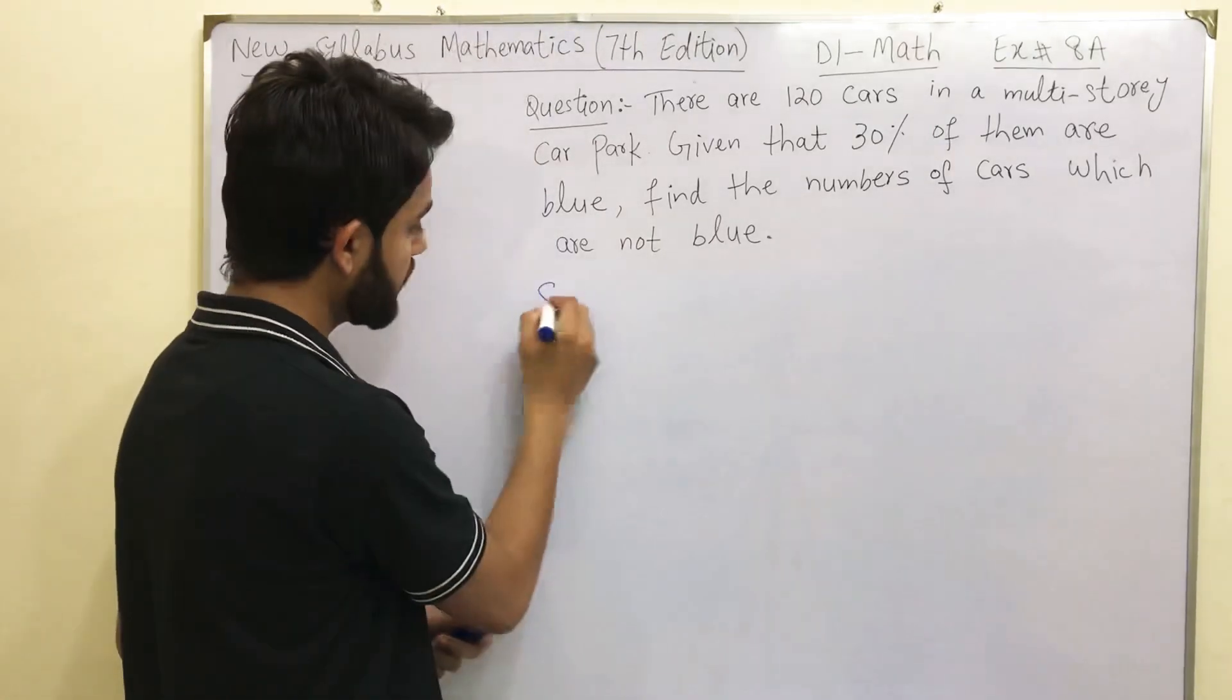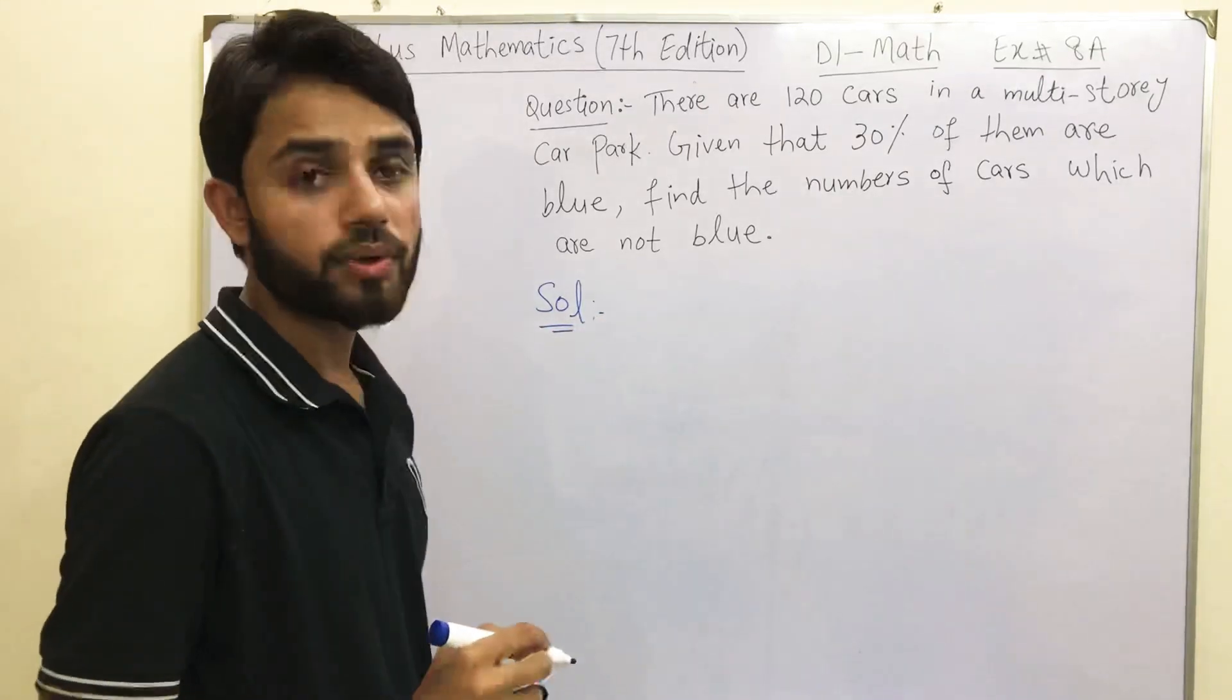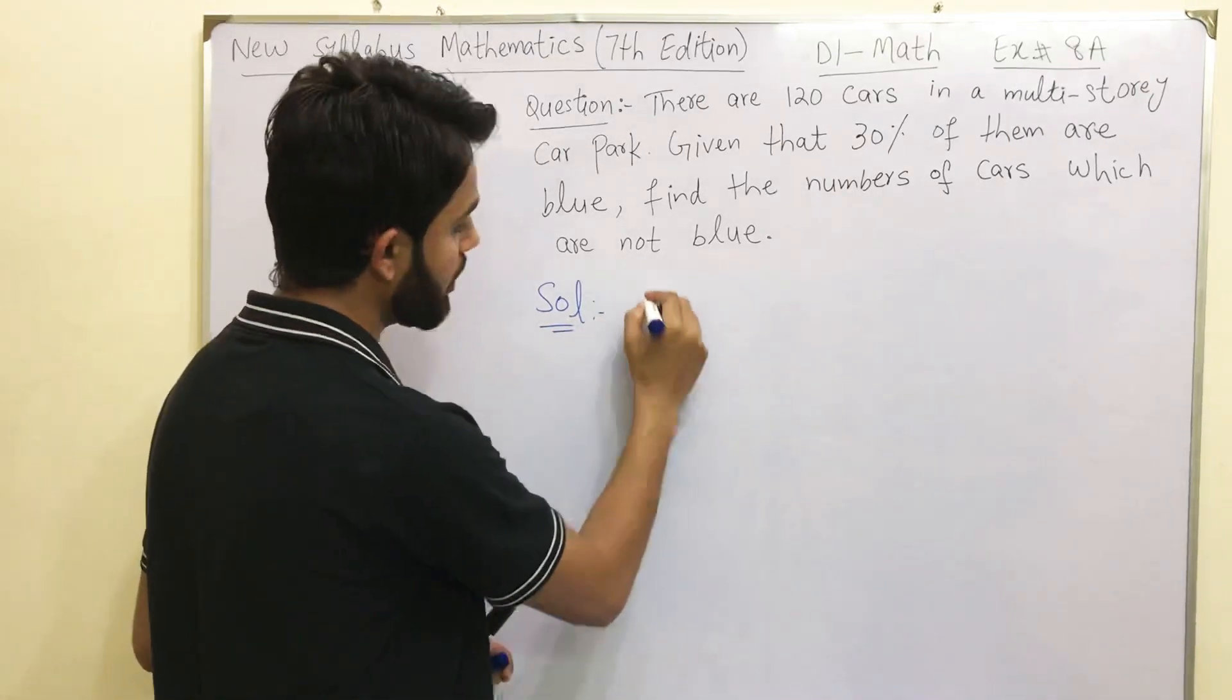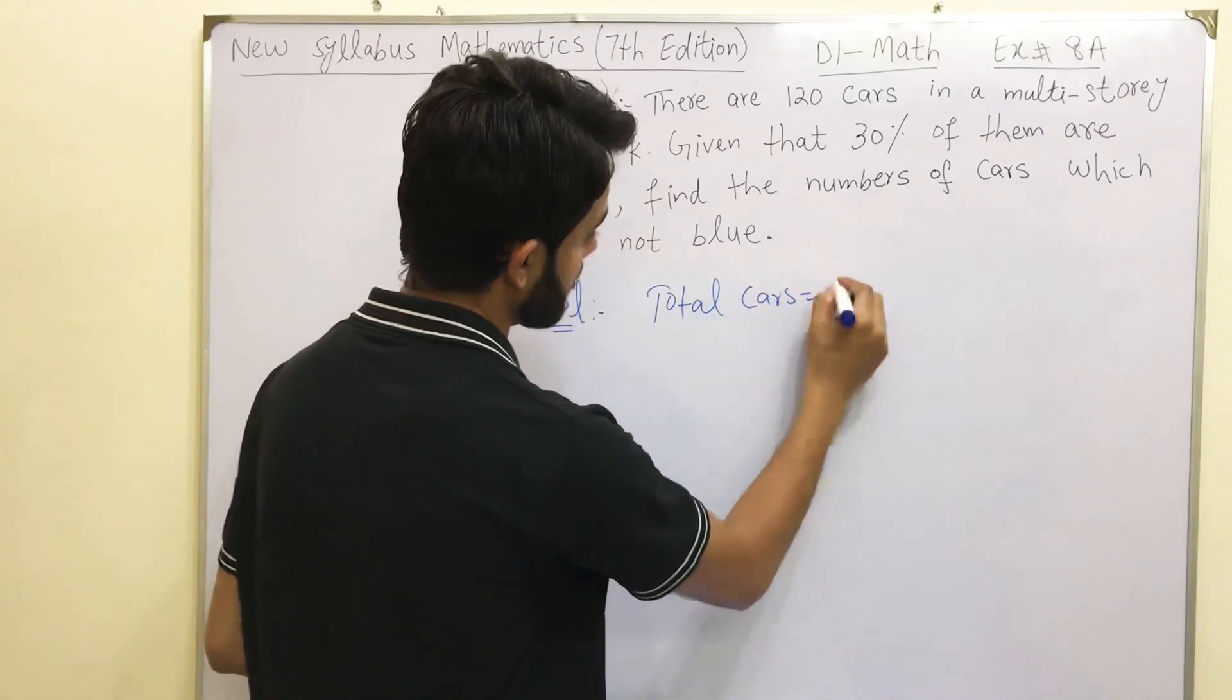So we are going to begin this question. There are 120 cars. So how many cars are there in total? Total cars: 120.